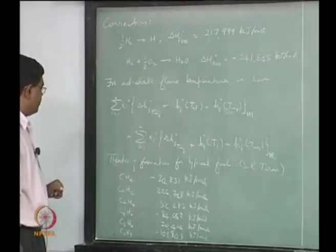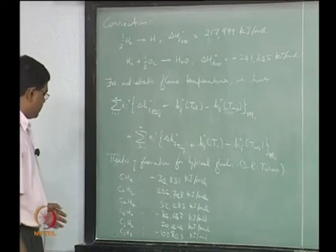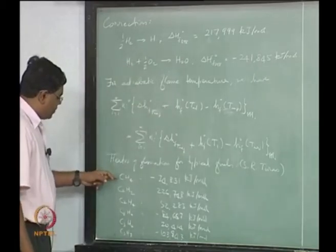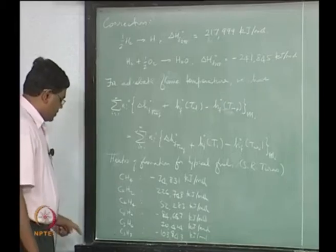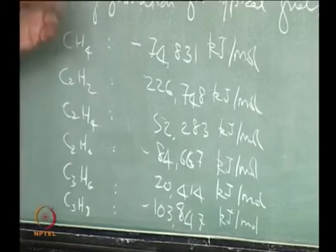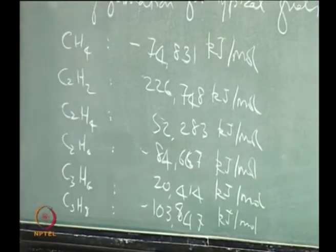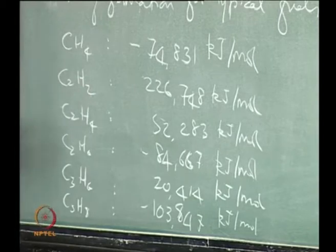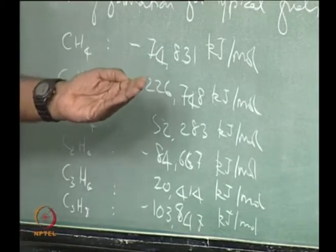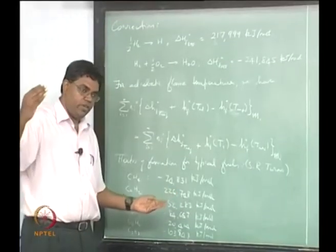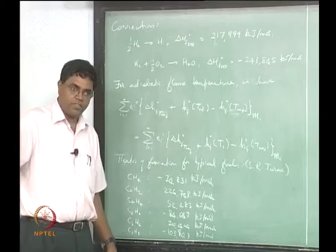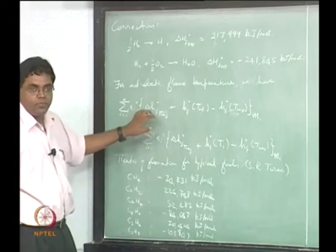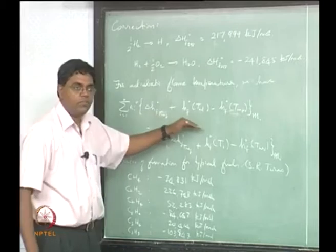If you look at typical values of standard heats of formation for typical fuels — listing from Turns' book — we have methane, acetylene, ethane, propene, and propane. Going to higher and higher hydrocarbons, we see that some are negative and some are positive. What we are looking for is that even if they are negative, they should not be highly negative values — somewhere around zero, negative or positive. Positive is better, but we do not want them to have as high negative values as the stable product standard heats of formation.